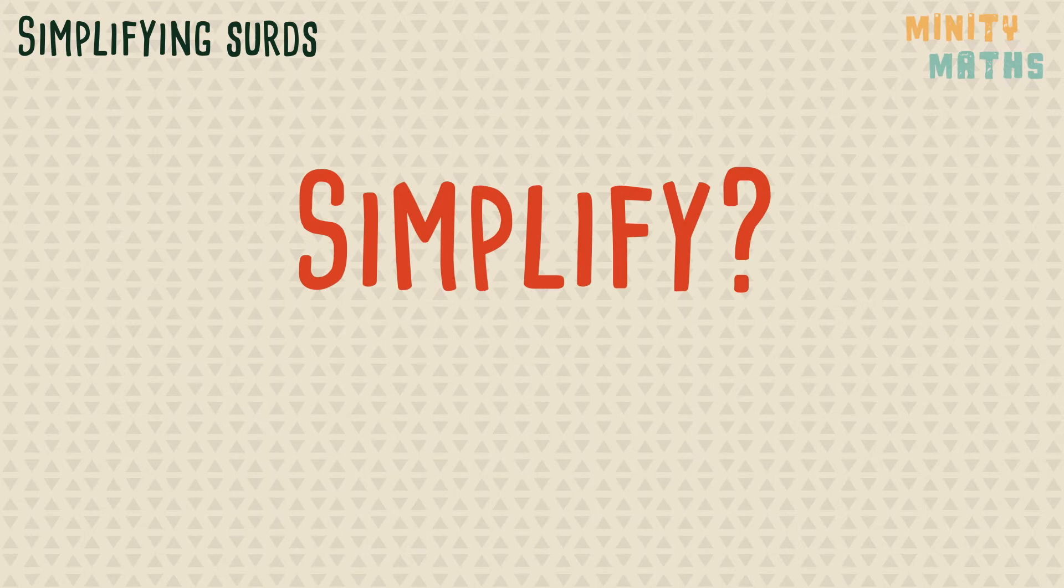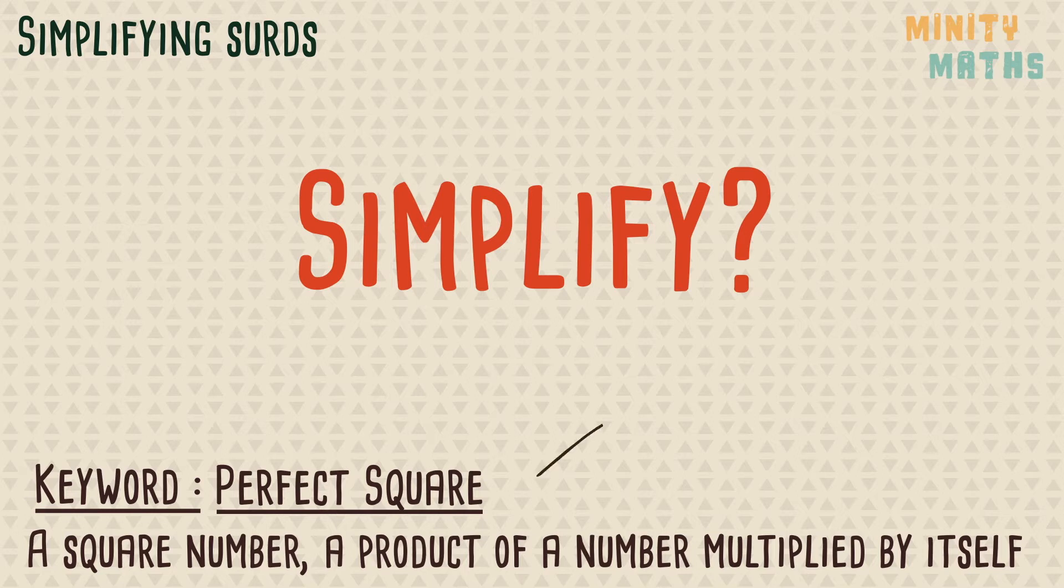What does simplifying a surd mean? Simplifying a surd means to rewrite a surd where the number under the root sign doesn't have a perfect square as its factor. This is called its simplest form.